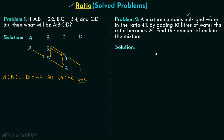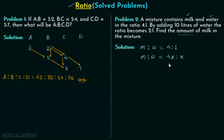We have milk and water with milk to water = 4:1. Since the ratio eliminates the common factor, we must include it to find the actual amounts. Let the common factor be x, so the amount of milk = 4x and the amount of water = x. This gives us the actual quantities before adding 10 liters.